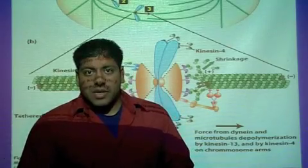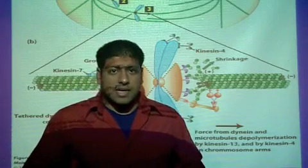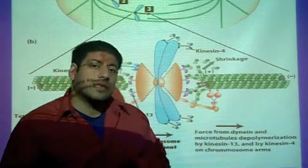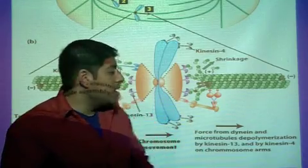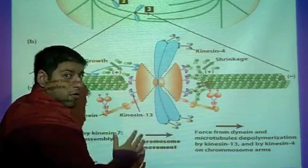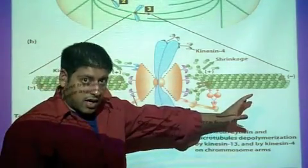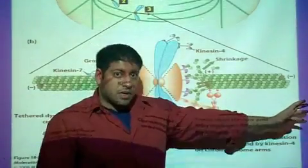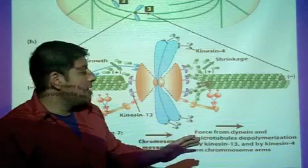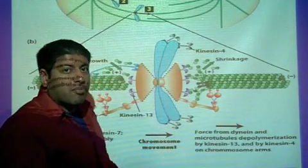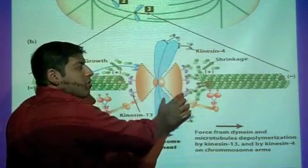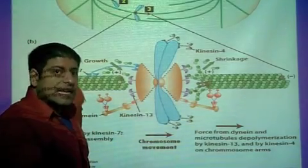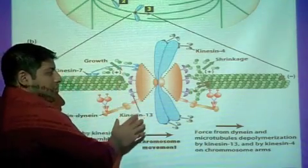We're going to be looking at two types of kinesins and dynein. Kinesin is a plus-end-directed motor protein. Dynein is always a minus-end-directed motor protein. The main objective here is to take this chromosome and move it to the right — we want to move this chromosome to the right in this direction. There's going to be a different set of proteins activated on the right side of the chromosome, and other proteins, active and inactive, on the left side of this chromosome.